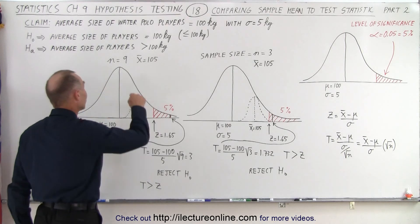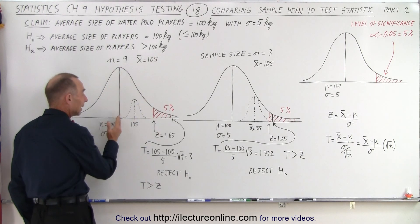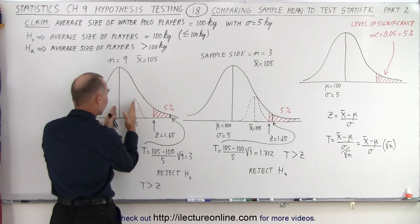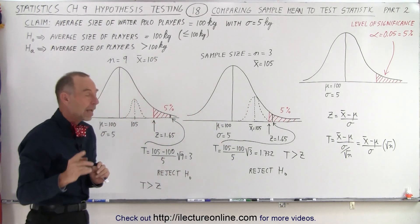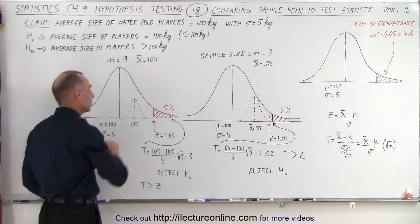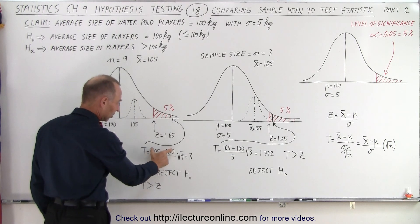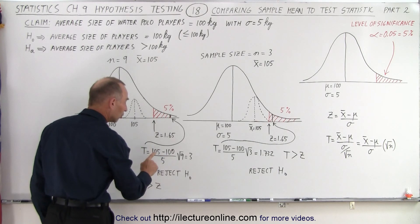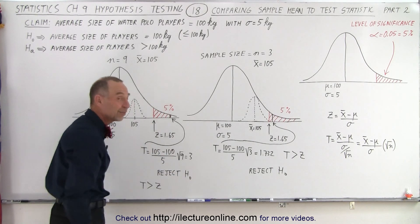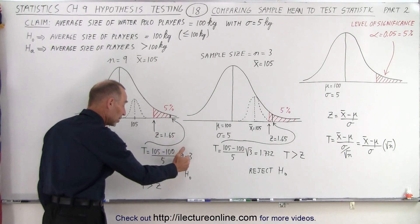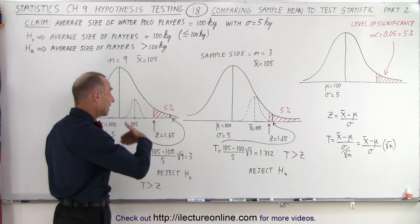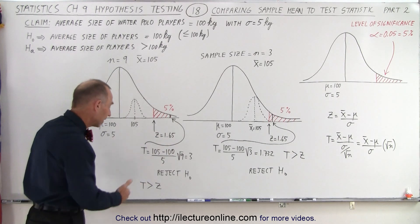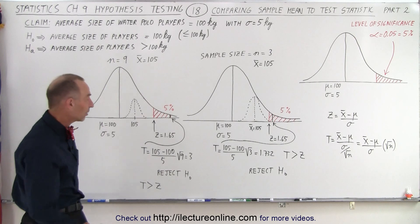Now, what happens when the sample size increases again to 9? The sample mean is still 105, so the difference between the population mean and the sample mean hasn't changed. But now we have a bigger sample of 9, so we calculate the test statistic: the difference between the sample mean and the population mean divided by the standard deviation, multiplied times the square root of the sample size, which is now 9 — so 3 times 1 is 3. The test statistic is now way bigger than the z-score, and therefore again we're going to reject the null hypothesis.